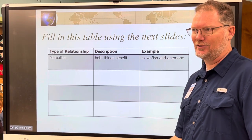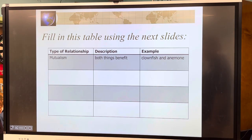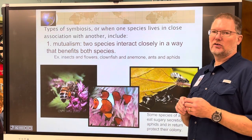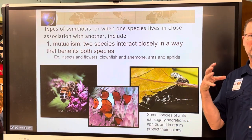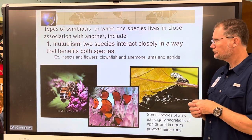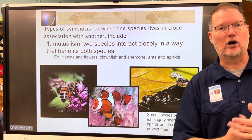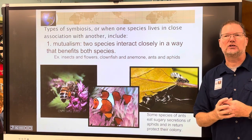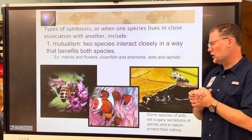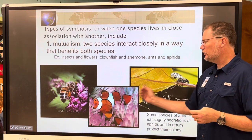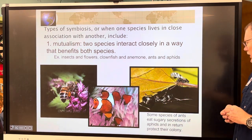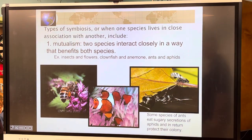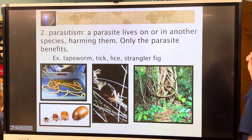Types of symbiosis — that's when one species lives in a close relationship with another species. Mutualism is the first one, already filled out on your chart. Mutualism is when both species benefit from the relationship. Examples include bees and flowers, clownfish and sea anemones, and ants and aphids.